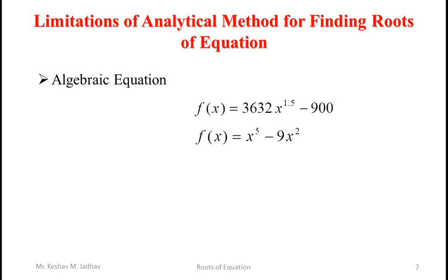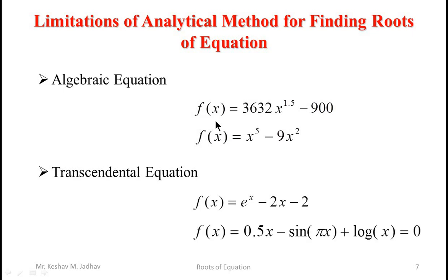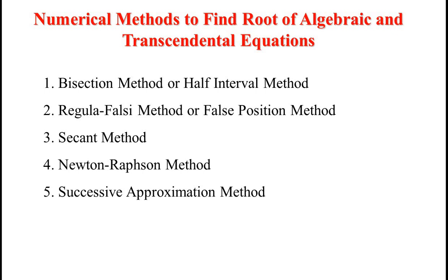Consider algebraic equations of higher degree or transcendental equations such as exponential or trigonometric equations. For such equations there is no formula or analytical method to get roots, so we need to go for numerical methods. These numerical methods include the bisection method (also called the half interval method), and the regular falsi method (also called the false position method), which can be used to find roots of algebraic and transcendental equations.